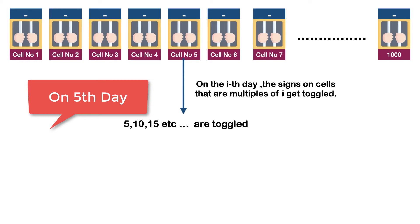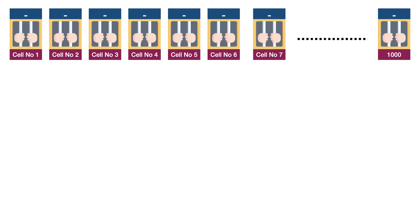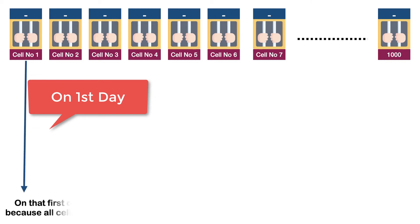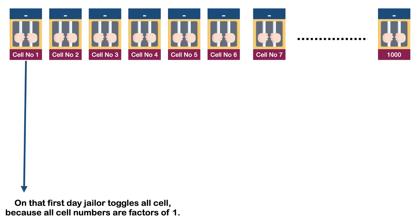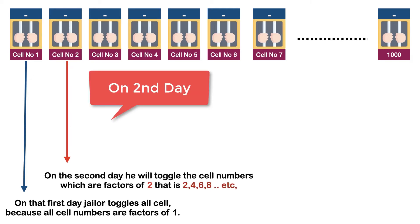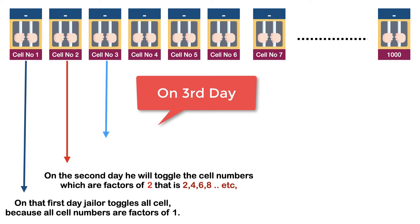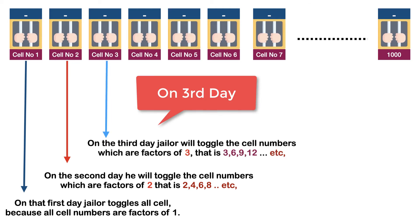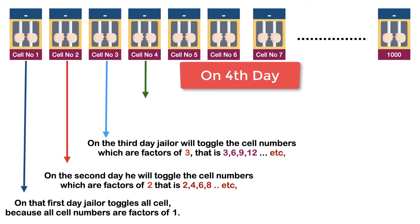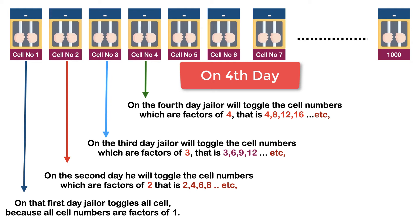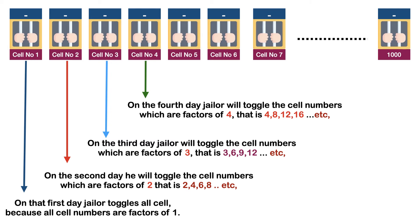Let's check what happens on different days from the beginning. On the first day, the jailer toggles all cells because all cell numbers are multiples of 1. On the second day, he will toggle cell numbers which are multiples of 2, i.e., 2, 4, 6, 8, etc. Similarly, on the third day, the jailer will toggle cell numbers which are multiples of 3, i.e., 3, 6, 9, 12, etc. This step repeats till the thousandth day.